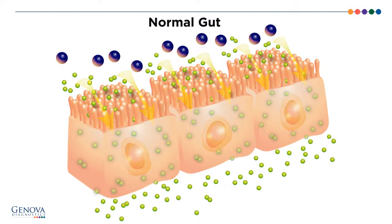Under healthy conditions, the intestinal mucosa functions as a digestive, absorptive organ for nutrients as well as a powerful immune and mechanical barrier against excessive absorption of bacteria, food antigens, and other macromolecules.